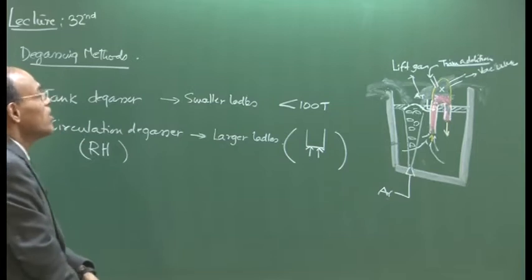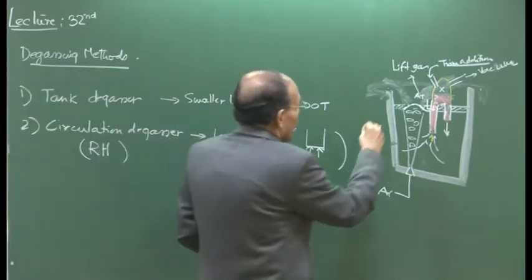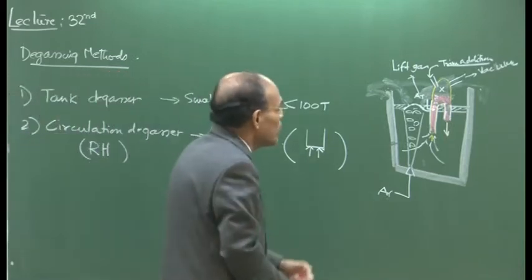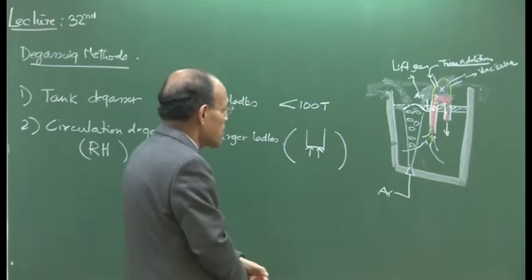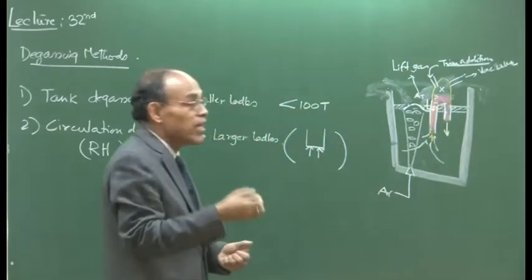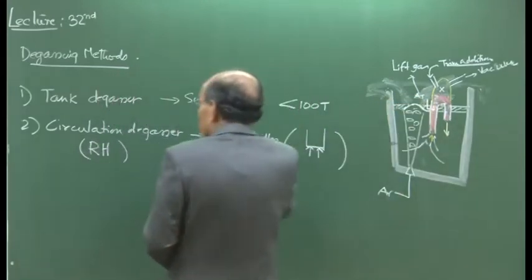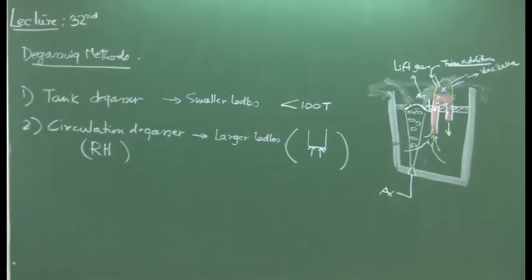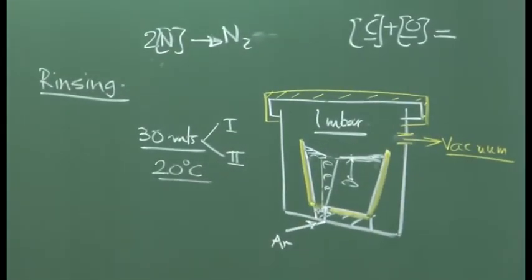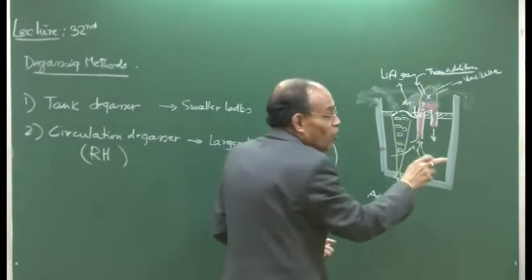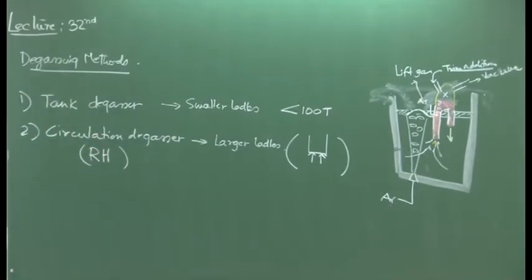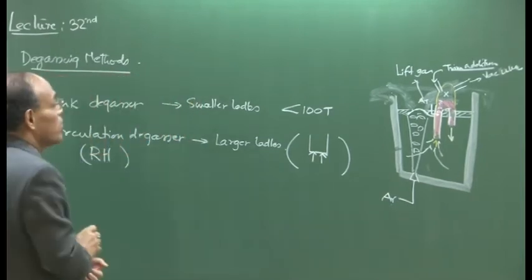Because every element of steel is exposed to vacuum in the circulation degasser — as opposed to the tank degassing system where parts of the surface can be covered by slag — we can expect that all elements of liquid metal are exposed to vacuum. As a result, a very large degree of degassing is achieved during the circulation degassing process.